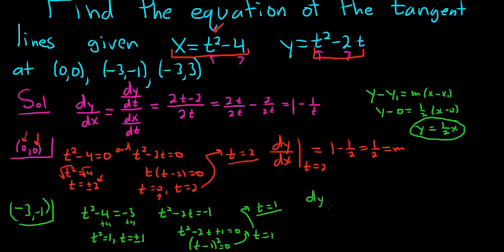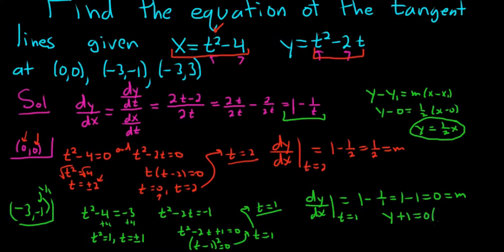So in this case, dy/dx when t is equal to 1, going back to our derivative here, you would just get 1 minus 1 over 1, so you just get 1 minus 1, so you get 0. So we have a slope of 0. So then using our point, we would have y plus 1 equals 0 times x plus 3. So we get y plus 1 equals 0, so y equals negative 1.